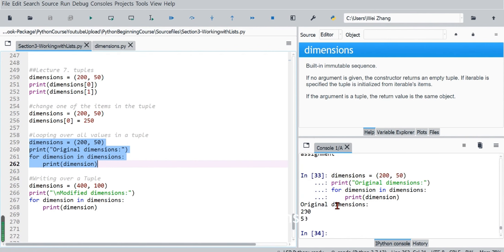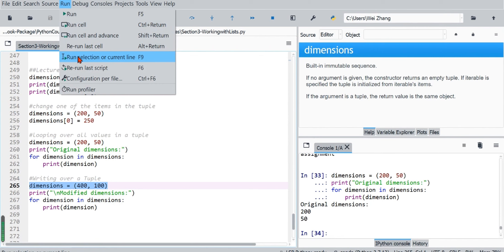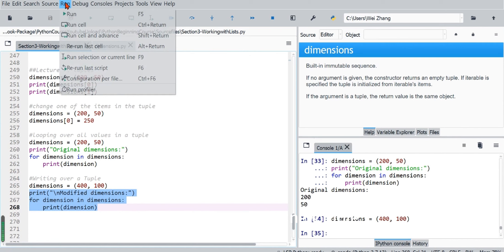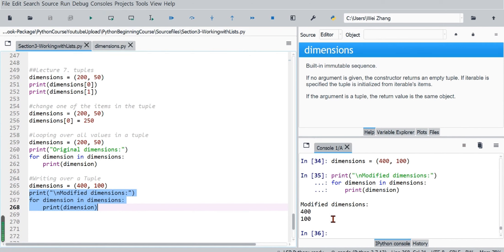The original dimensions is 200, 50. Here we try to write over a tuple entirely. We create this tuple again, then we print 'Modified dimensions:', and with a for loop print each value in the new tuple.